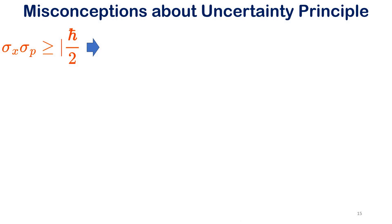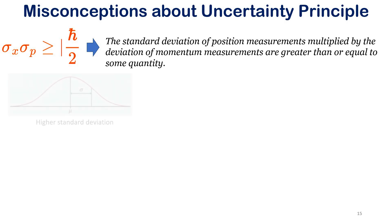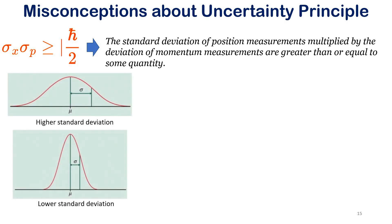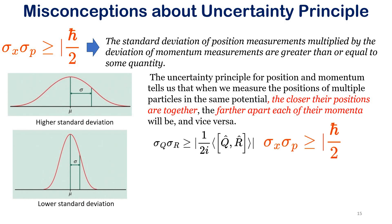Taking the standard deviation formulation: the standard deviation of position measurements multiplied by the standard deviation of momentum measurements is greater than or equal to some quantity. Higher standard deviation means the curve is much more dispersed; lower standard deviation means it is narrower. The uncertainty principle for position and momentum tells us that when we measure positions of many trillions of particles in the same potential, the closer their positions are together, the farther apart each of their momenta, and vice versa — there is no point of 'uncertainty' in that sense.